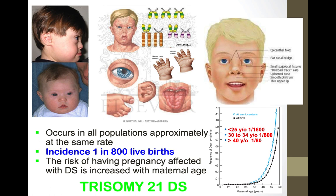Trisomy 21 occurs in all populations at approximately the same rate — European, African, Asian — because it is just a problem with chromosomal duplication. The incidence increases with maternal age: less than 25 years, 1 in 1,600 births; 30–34 years, 1 in 800; over 40 years, 1 in 80 — ten times more than in younger women.